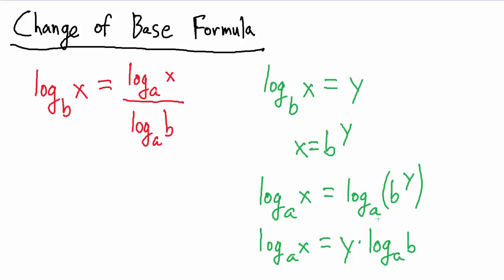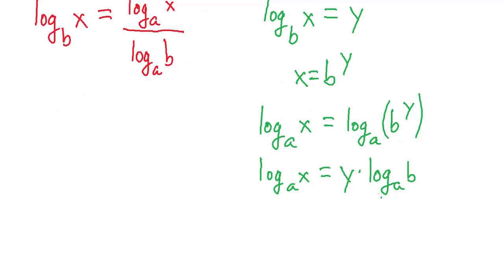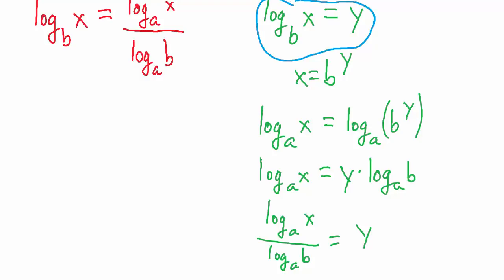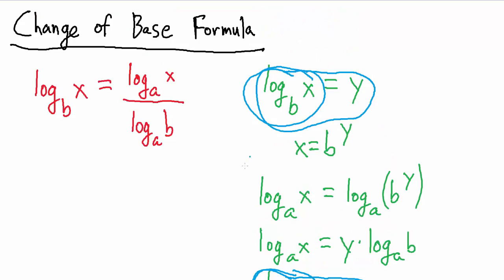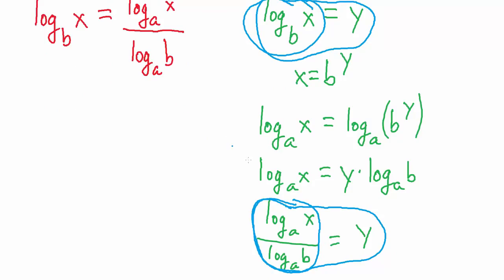Now what we can do is divide both sides by the base A log of B, and we get base A log of X divided by the base A log of B equals Y. But remember Y is equal to the base B log of X. So Y is the base B log of X, but also Y equals the base A log of X divided by the base A log of B. That tells us that base B log of X equals that expression — and that's exactly what the change of base formula is.